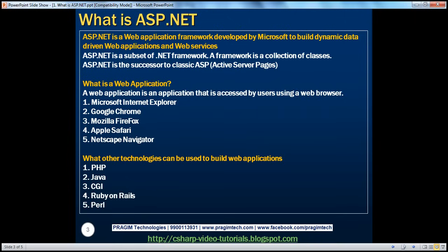ASP.NET is a subset of the .NET framework that can be used to build web applications and web services. Along the same lines, we have something called ADO.NET. ADO.NET is not a different technology altogether. It is a subset of the wider .NET framework that can be used to pull data from different databases and serve it to a console application, web application, or Windows application. So any type of application where you want to retrieve data from data sources, you will use ADO.NET. Similarly, ASP.NET is a subset of the .NET framework used to build web applications and web services.